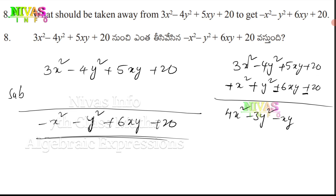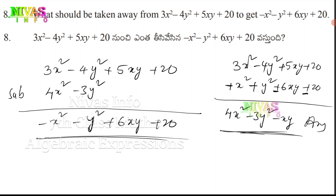Here the result is 0. So this is what happens — this is my answer. Check them. Subtraction gives: 4x² minus 3y² minus xy.